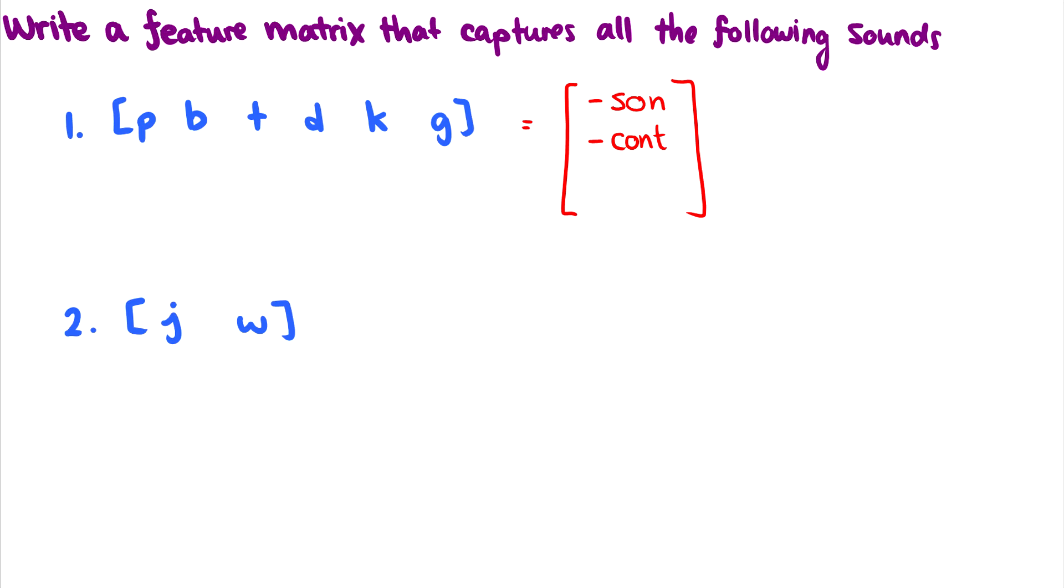So I need to get rid of tʃ, I need to get rid of dʒ. What feature separates dʒ and tʃ from p, b, t, d, k, and g? Well, affricates are plus delayed release, while stops are minus delayed release.